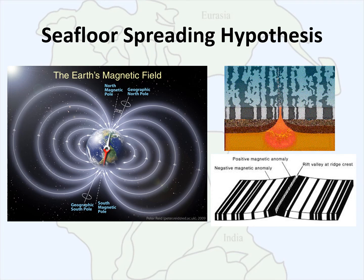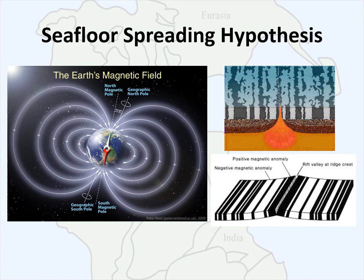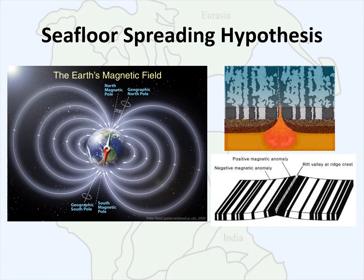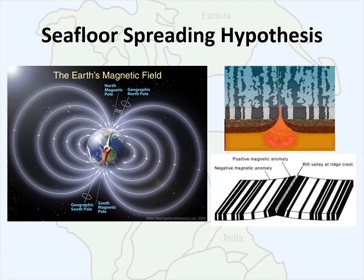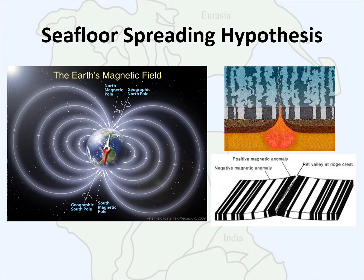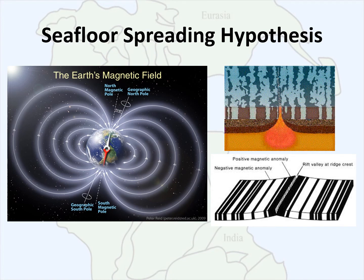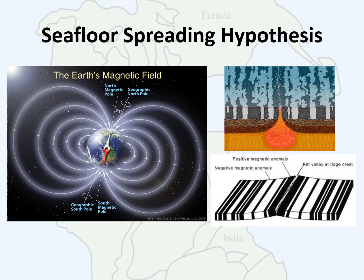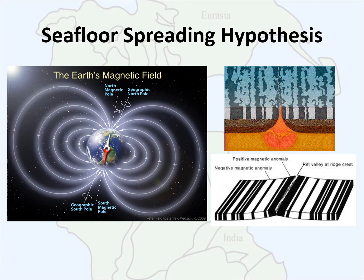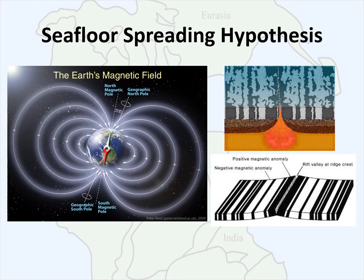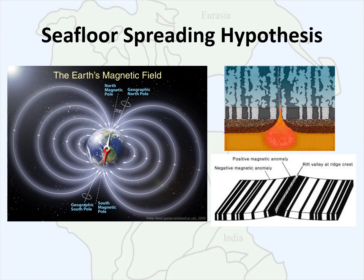The magnetic field is not constant — it can flip over time. Sometimes the magnetic field is aligned with true north, which is called magnetic normal or a positive anomaly. Other times the magnetic field is opposite to true north, in which case south becomes north; this is known as a reversal or a negative magnetic anomaly.